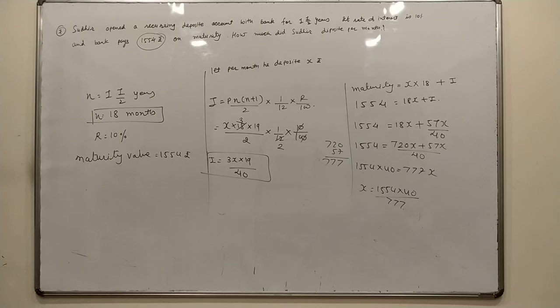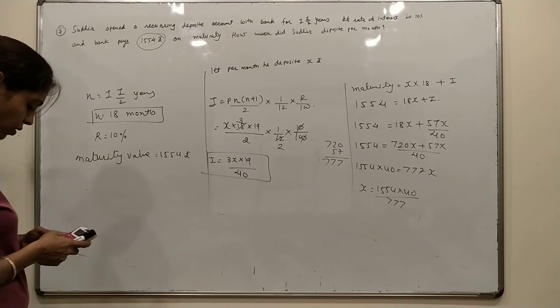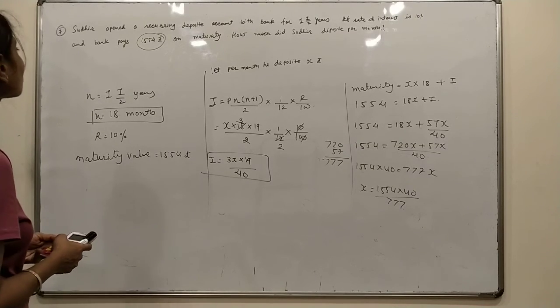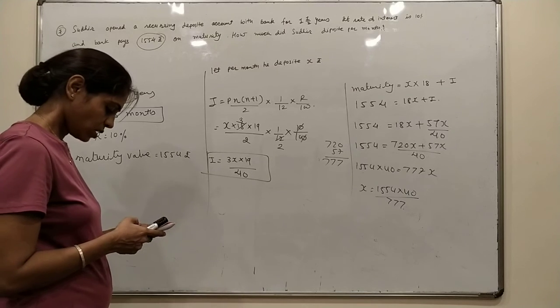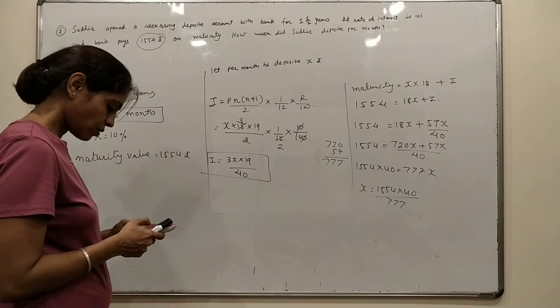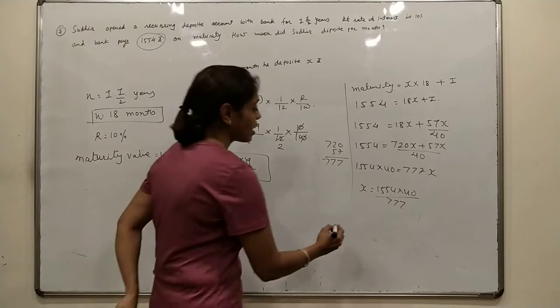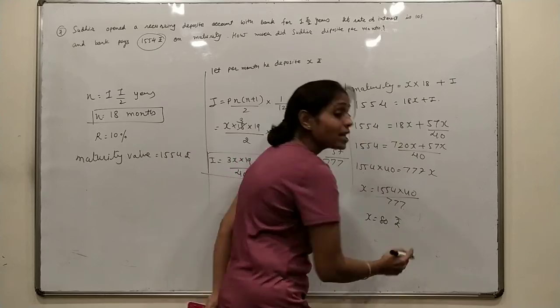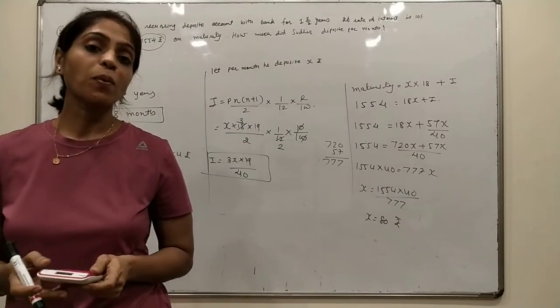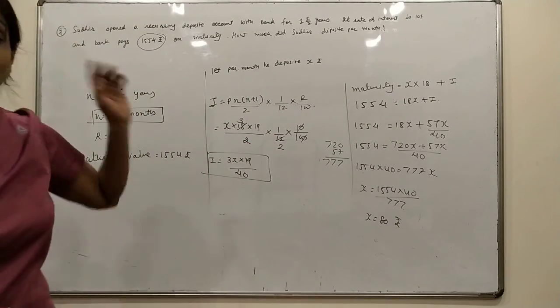1554 into 40 divided by 777 is 80. x equals 80 rupees per month he deposits for this.